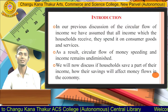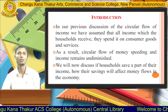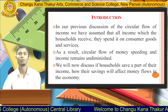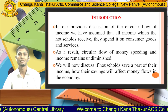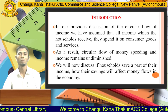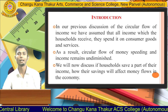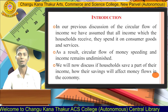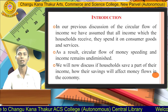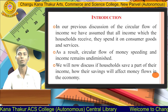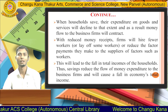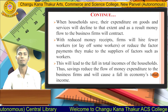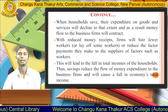In our previous discussion of the circular flow of income, we assumed that all income which households receive, they spend it on consumer goods and services. As a result, the circular flow of money spending and income remains undiminished. We will now discuss how, if households save a part of their income, those savings will affect money flow in the economy.